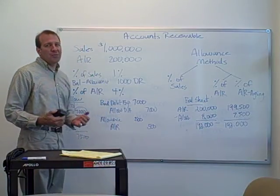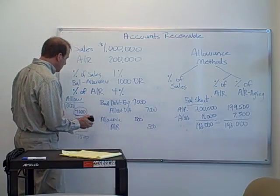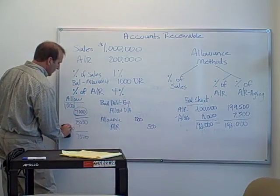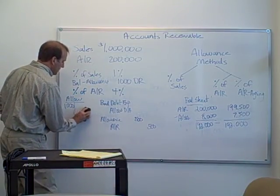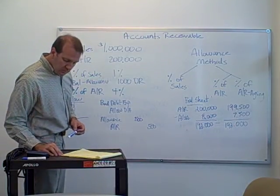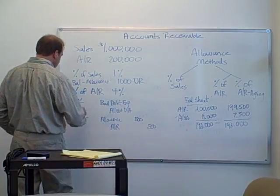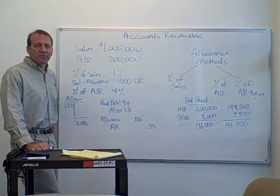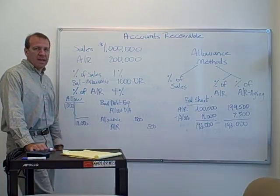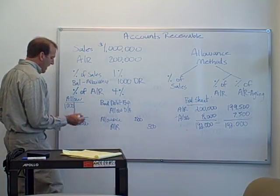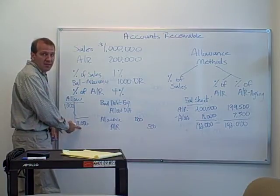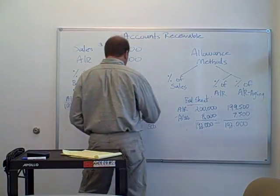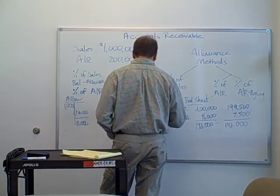Let's assume that when we perform the aging, our desired ending balance is $11,000. When we add up all the aging accounts receivable balances times their percentages, they total $11,000. Since this is a percentage of receivables method, we back into our adjustment. Our current allowance has a debit balance of $1,000, so the adjustment would be $12,000 — we debit bad debt expense $12,000 and credit the allowance $12,000.